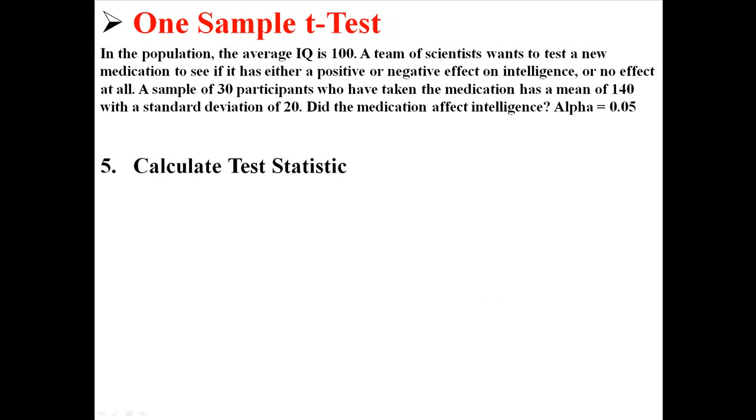So now let's actually calculate that t. And it uses this equation right here, where the sample mean is 140, the population mean is 100, the sample standard deviation is 20, and the sample size is 30. So I'm just going to plug those things into the equation, and that's how I get a t of 10.96.